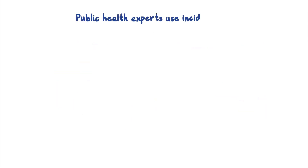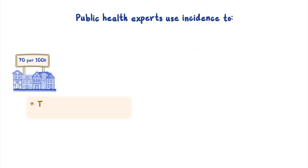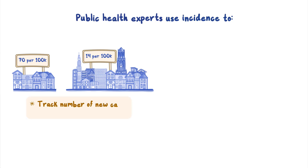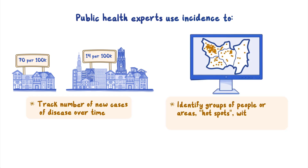Public health experts use incidence to track the number of new cases of disease over time, or to identify groups of people or areas — called hotspots — with especially high risk for infection.